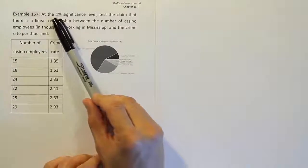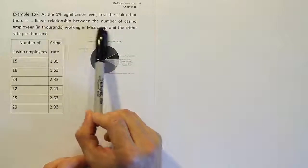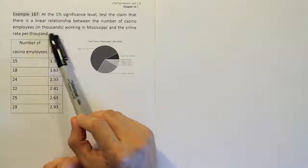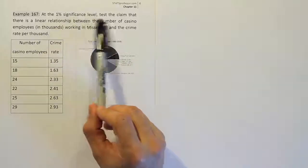Example 167. At the 1% significance level, test the claim that there is a linear relationship between the number of casino employees in thousands working in Mississippi and the crime rate per thousand.